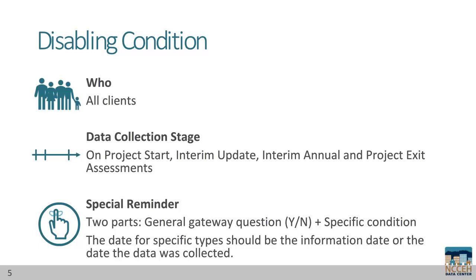A special reminder about disabling condition: there are two distinct parts — the general gateway yes/no question and the specific types of conditions included in the definition. They are equally important and will most likely align. Each of the specific types of conditions must have a date, called the information date, or the date when the data was collected. It does not refer to when a client was diagnosed; it is the date of the project start, interim update, or project exit.